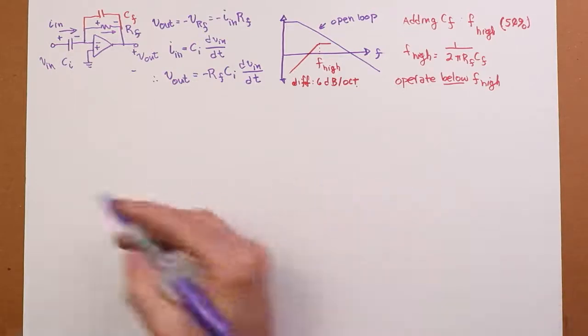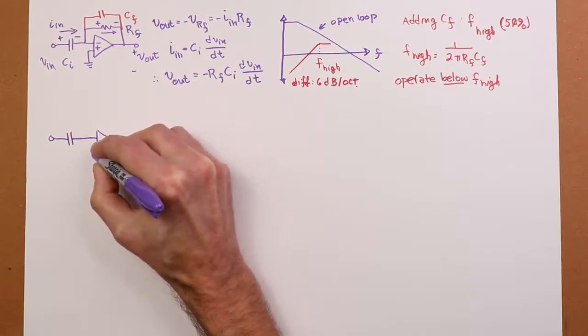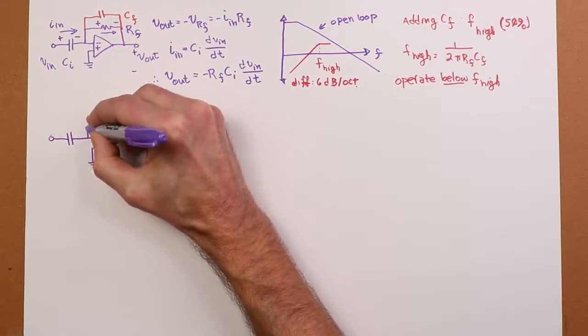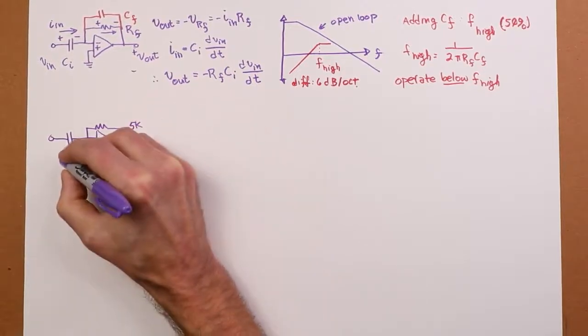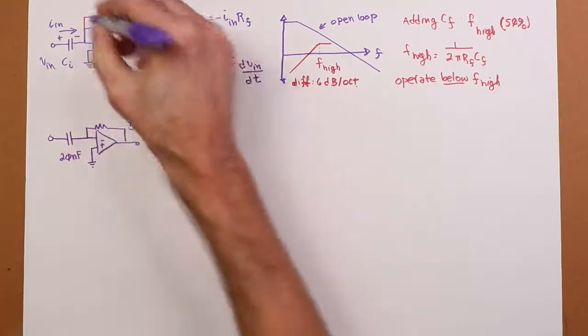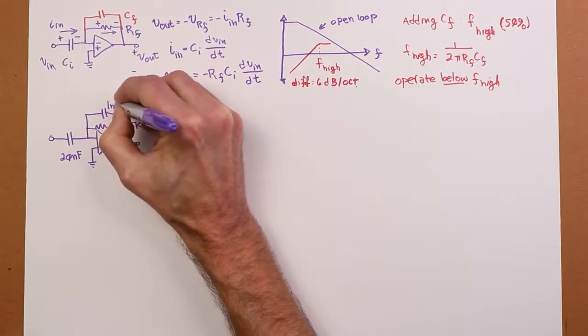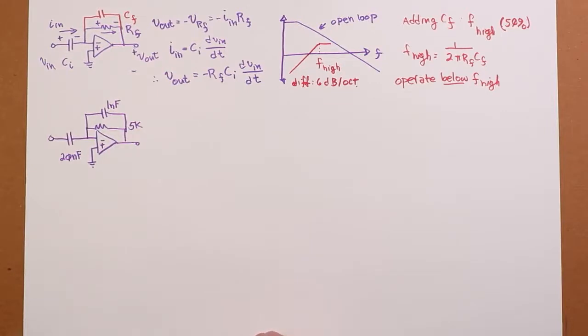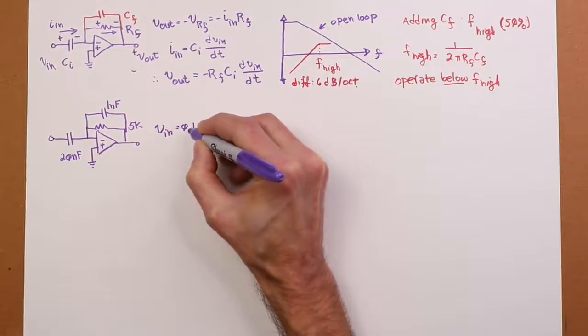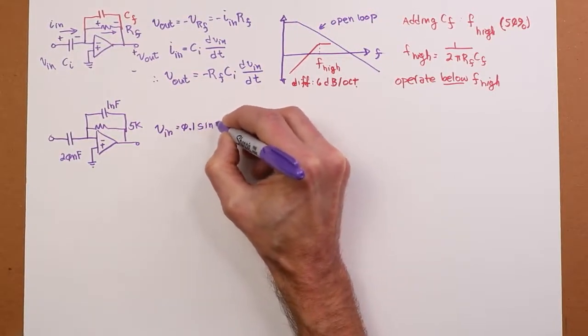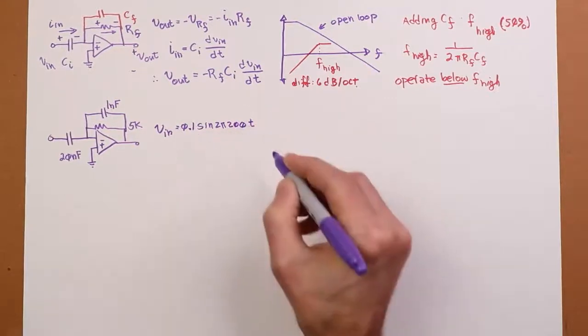So let's take a look at an example. What I'm going to do here is use sort of the mirror image of the one that we used in the integrator video. So I'm going to use the same components: 5k resistor there, a 20 nanofarad cap here, and then the shunting C_F. I'm going to make that one nanofarad. The input waveform that we're going to look at is going to be a 100 millivolt, 0.1 volt peak sine wave at 200 hertz.